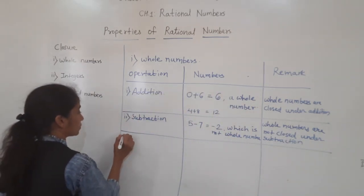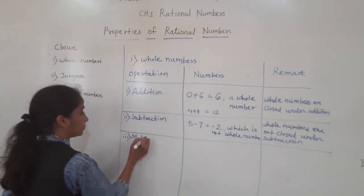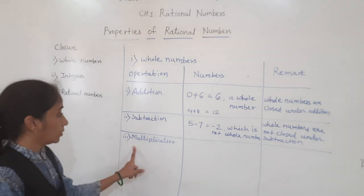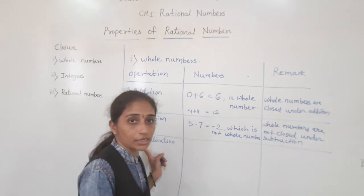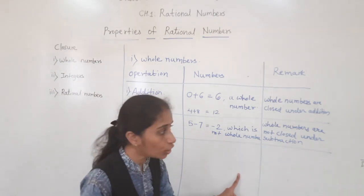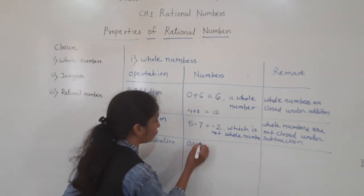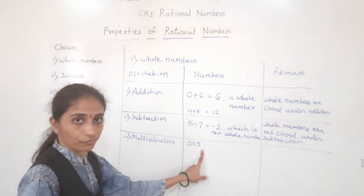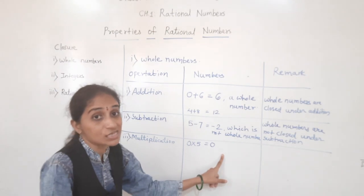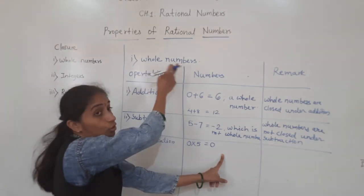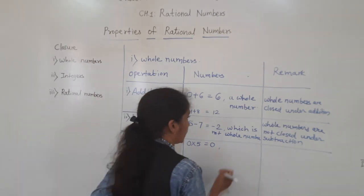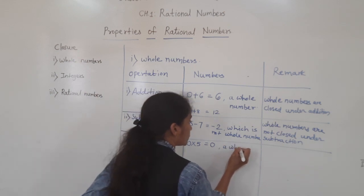Now, next operation: multiplication. We will see if the closure property works for whole numbers in multiplication. Take the example: zero times five. Any number multiplied by zero gives zero. Is zero a whole number? Yes, zero is a whole number.